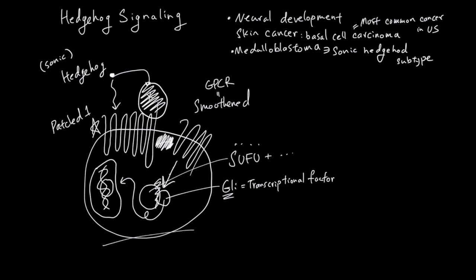And depending on this cell that receives the hedgehog ligand, could be neural cell or skin cell, GLI can help transcribe different set of proteins and the cell changes its properties.